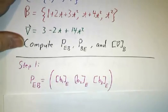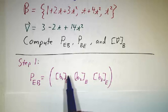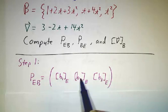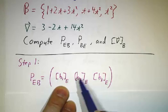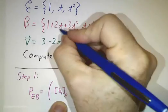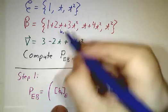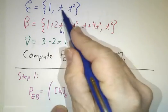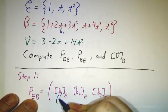So the first step is we want to figure out what is P_EB. That means we need to take the b basis and express it and find the coordinates of the b basis in the e coordinates. So what's b1? Well, b1 is our first element of the b basis. And what are its coordinates? Well, its coordinates in the e basis are 1, 2, 3, because it's 1 times 1 plus 2 times t plus 3 times t squared. So this is 1, 2, 3.